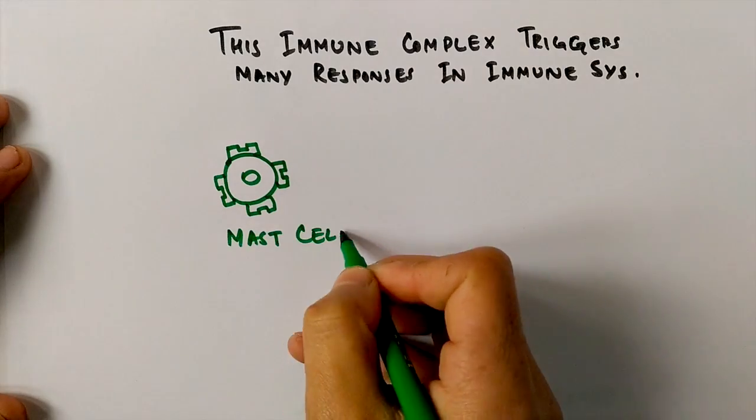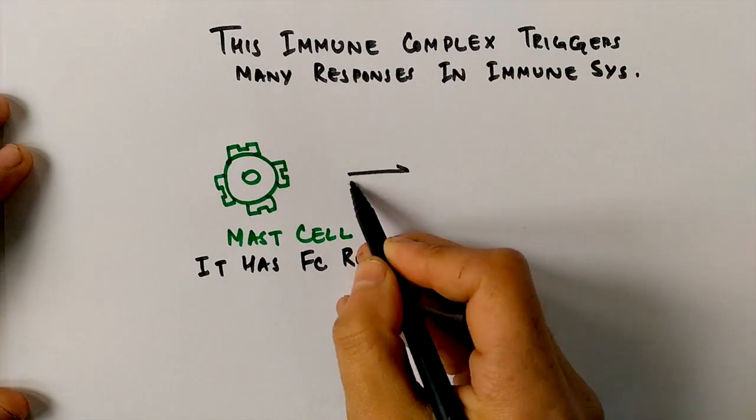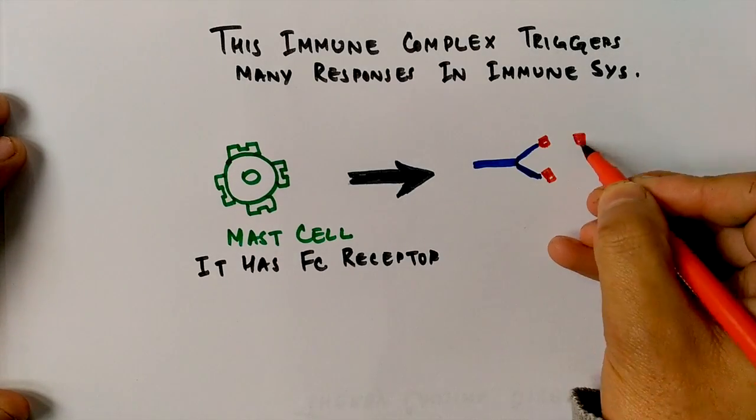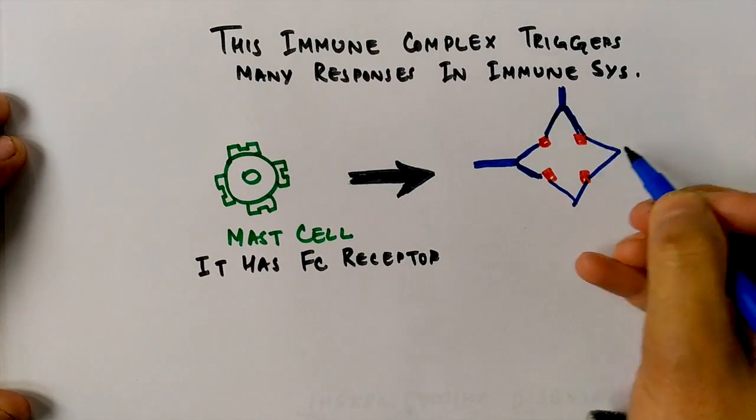We have different types of cells in our immune system. Like in the case of hypersensitivity type 1, we have the mast cell. In this case, we also have the mast cell that triggers the immune response.